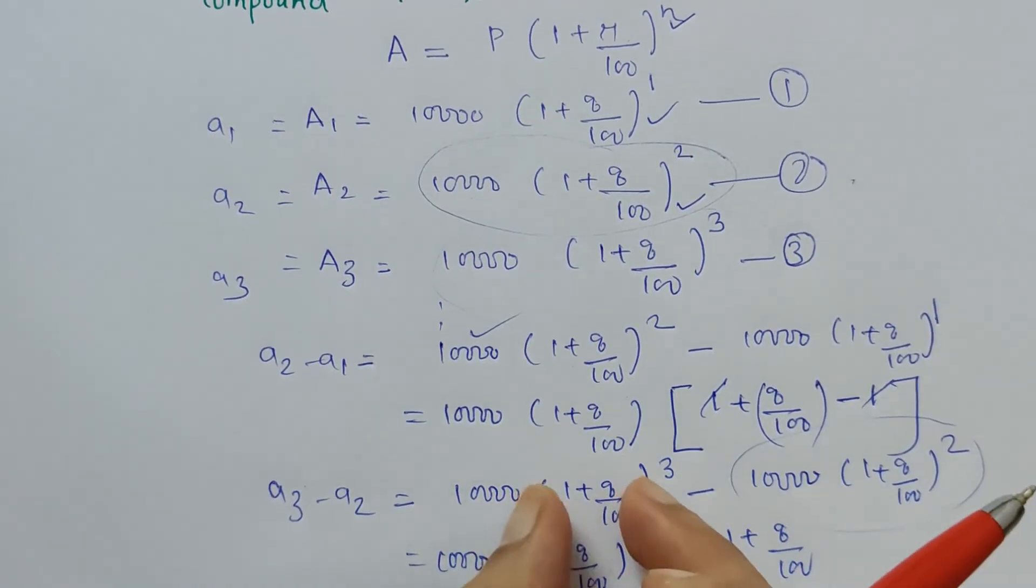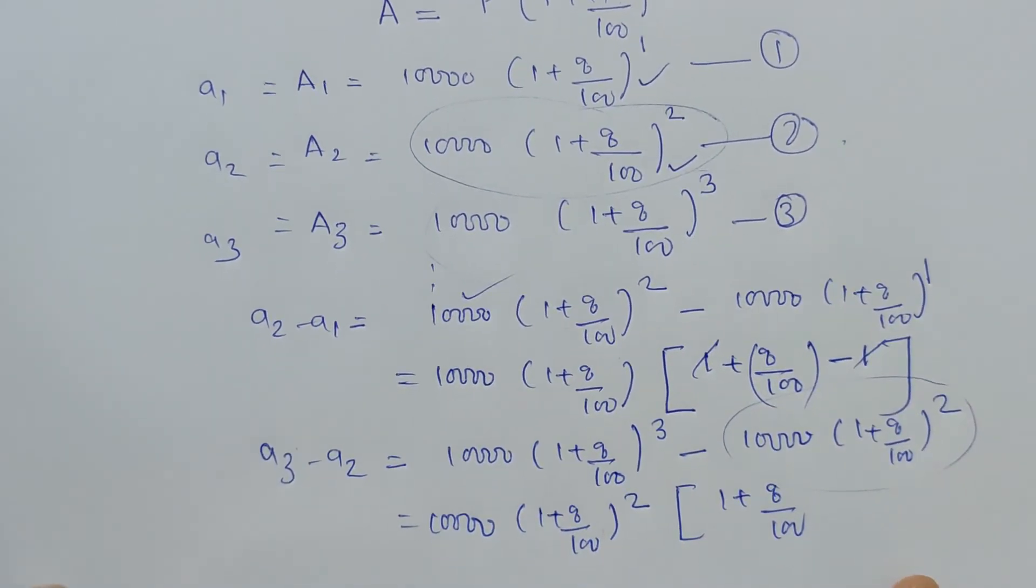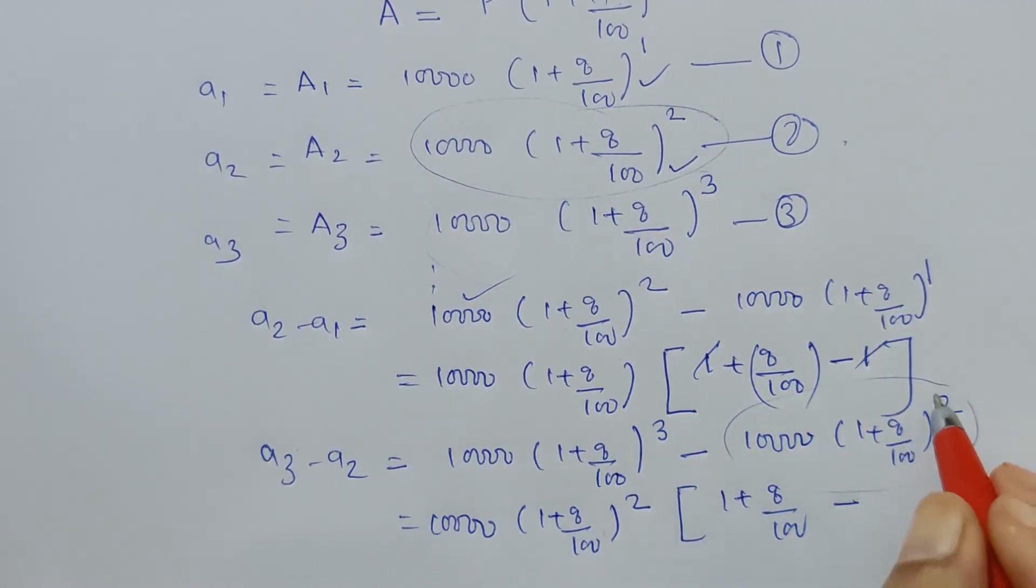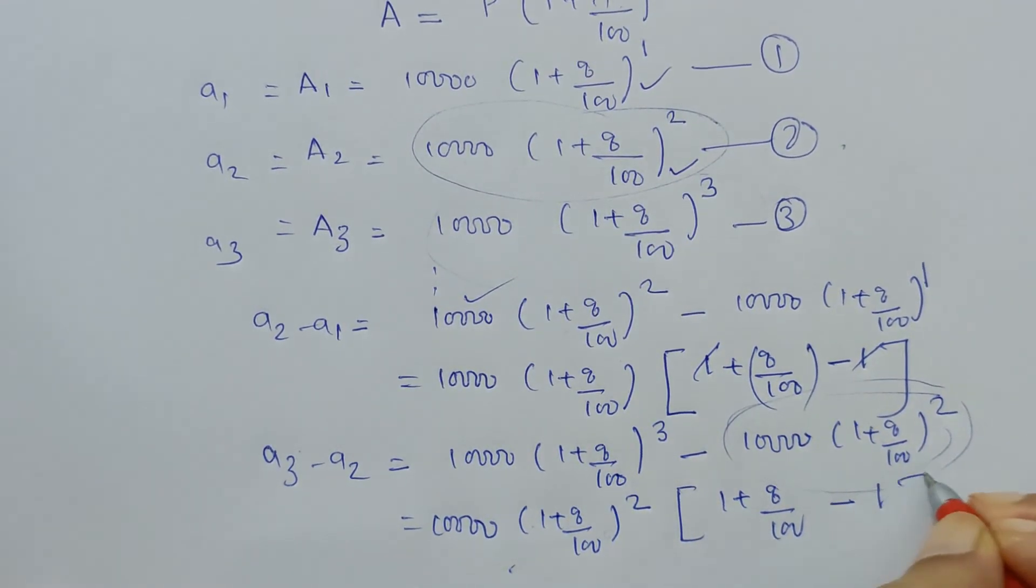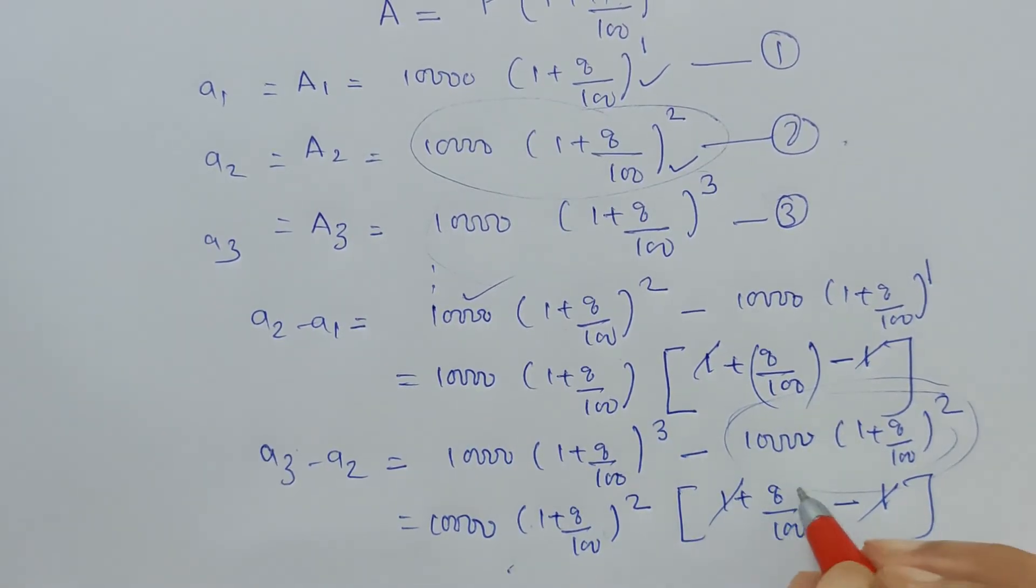So (1 + 8/100) is left here, so I am writing it as it is. And here, nothing is left because everything we have taken outside, so only 1 is left. So 1 and -1 gets cancelled, only 8/100 is left here.